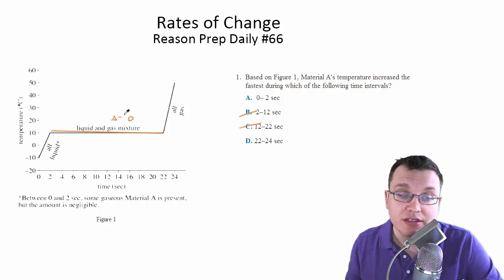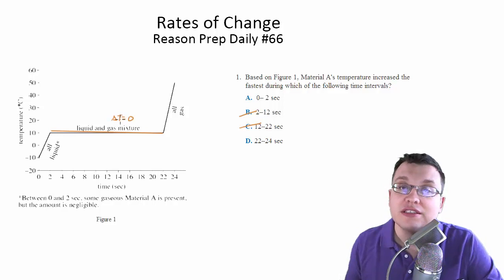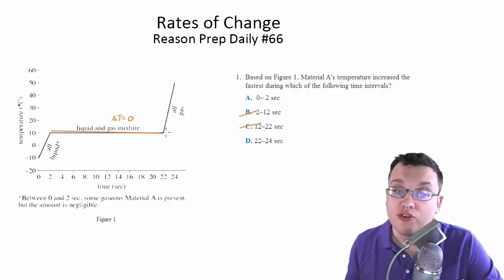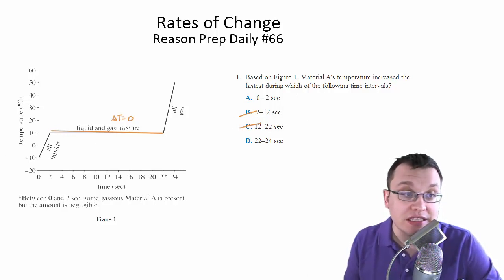So we'll say the delta T. Delta meaning change. The delta T, the change in temperature, is zero. There's no change in this interval, so there's no way the temperature is going to be increasing the fastest in these intervals, in these ranges.